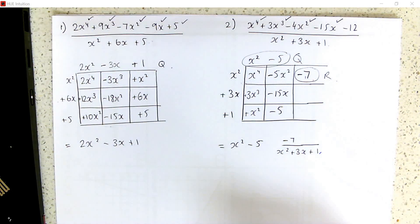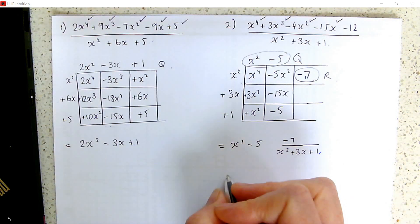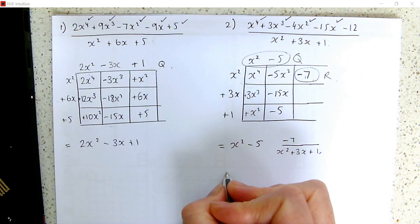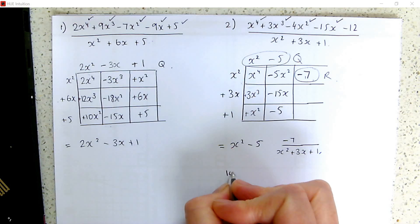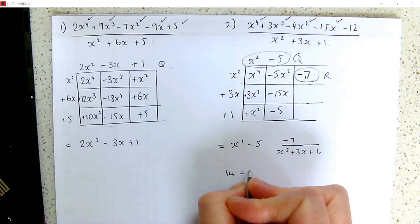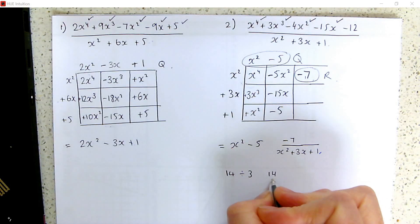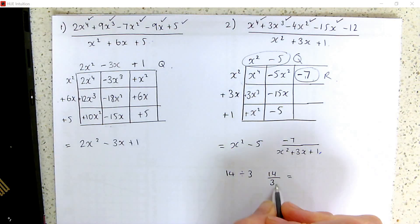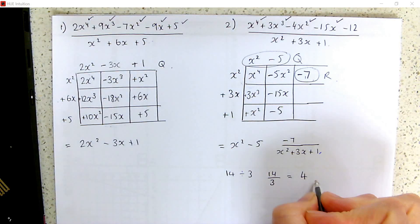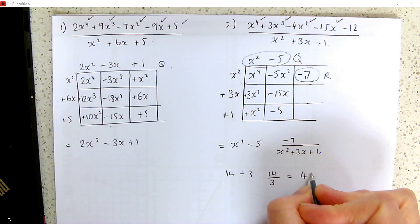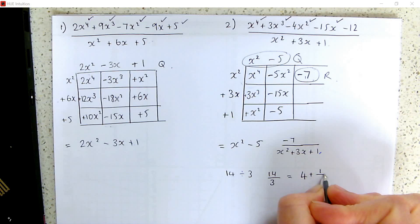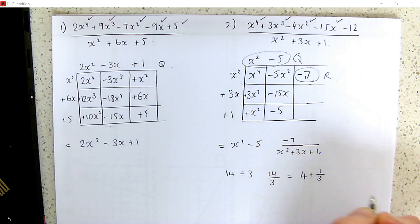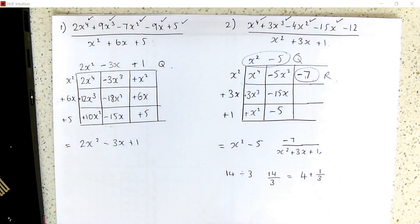It's a little bit like if you're doing 14 divided by 3. So we'd write 14 over 3, and that is the same as 4 remainder 1 out of 3. That's the same sort of thing — that's how we write it.